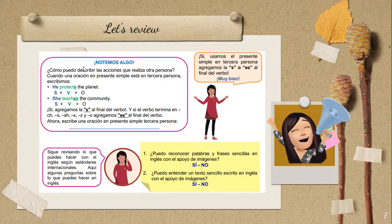Finally, chicos, let's review. Para escribir una oración en tercera persona en el presente simple, no olvidar que los verbos van a terminar en S o ES. Vamos a leer este pequeño punto de gramática. Y finalmente respondemos nuestras preguntas de autoevaluación.